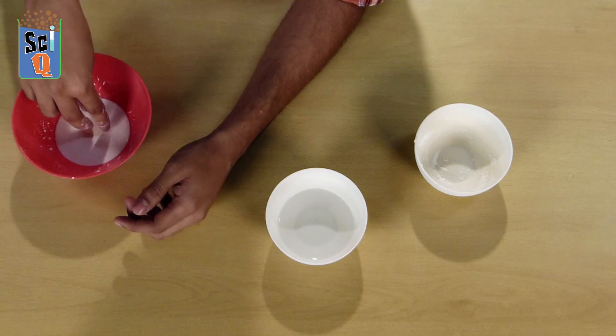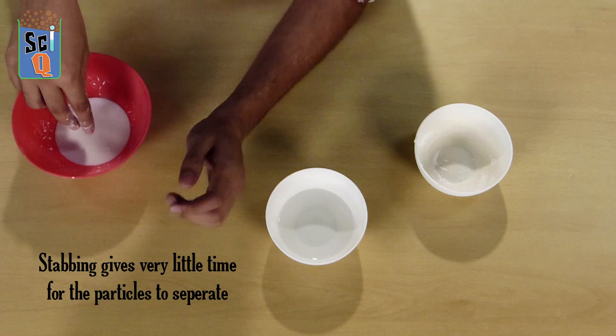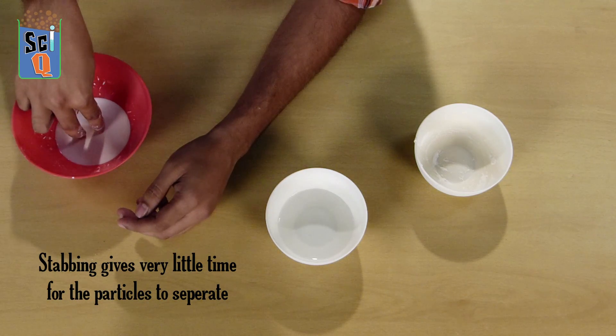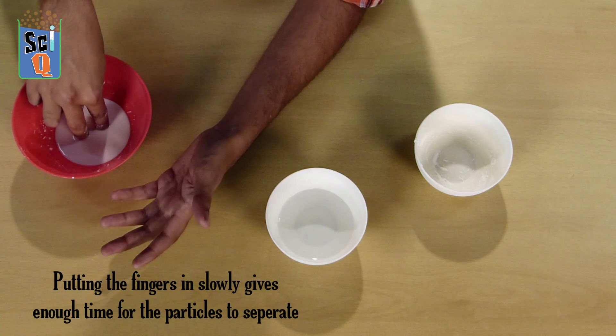So when I stab the surface, what's actually happening is that the particles in the liquid don't have enough time to separate. But when I leave my fingers there and push it in slowly, the particles just move away.